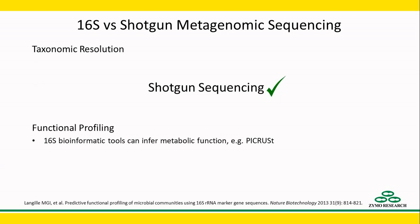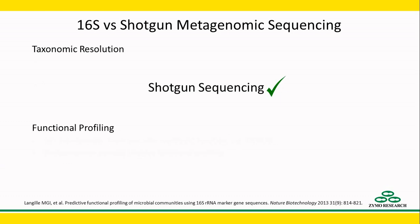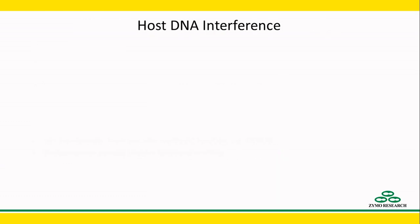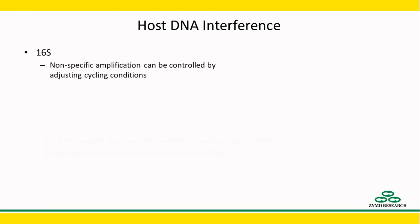PICRUST is one such program. But in general, shotgun metagenomic sequencing is often utilized when functional profiling is required because of the additional gene coverage. The presence of too much host DNA can cause nonspecific amplification in the library preparation process of 16S sequencing.